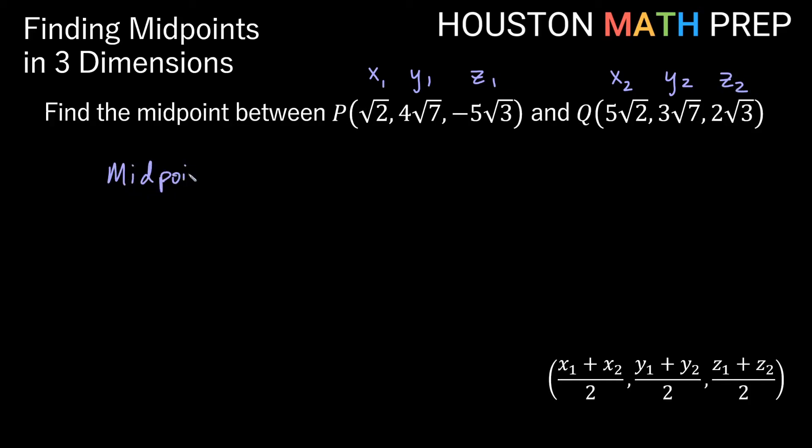Again, just using this idea of taking the average that we have written down in the bottom right corner here. So if we do this, the nice thing about these roots is these, I've at least made these like terms. So I have root 2 plus 5 root 2 over 2. They're the same kind of root, right? They're both a root 2 term. Those are like terms.